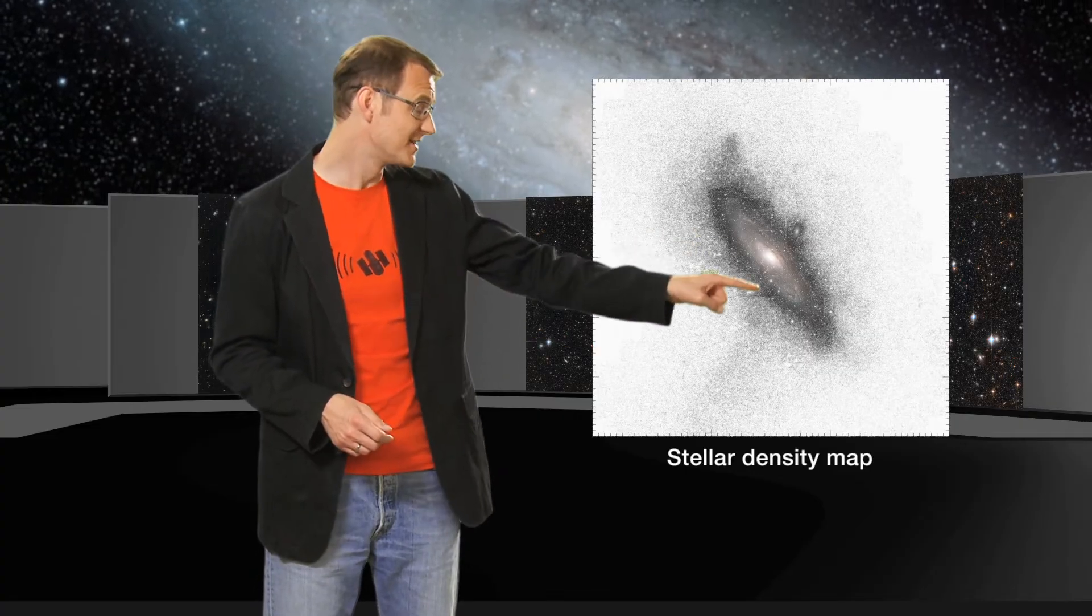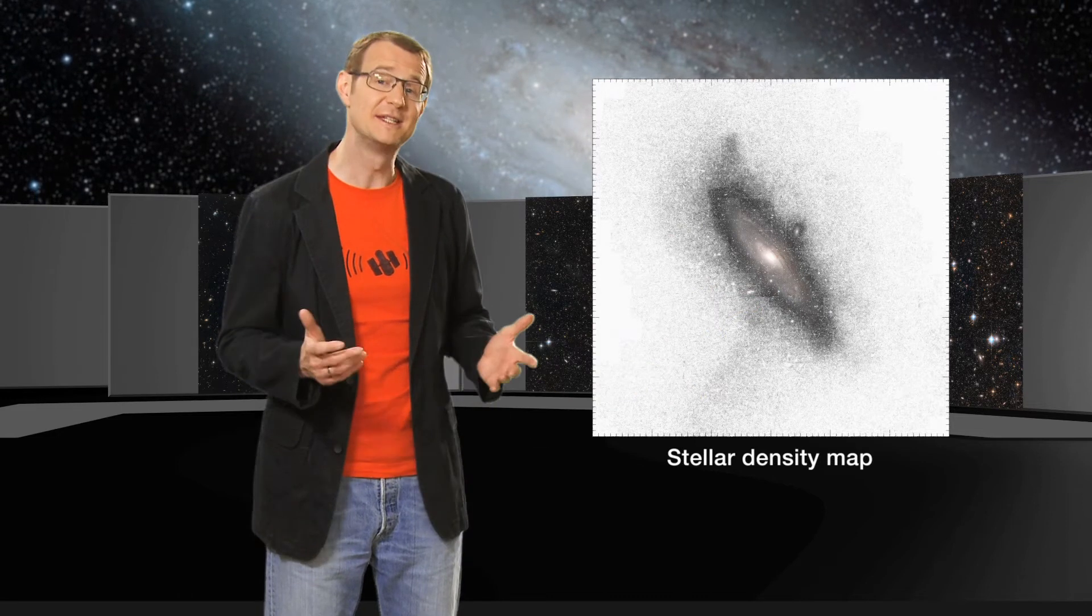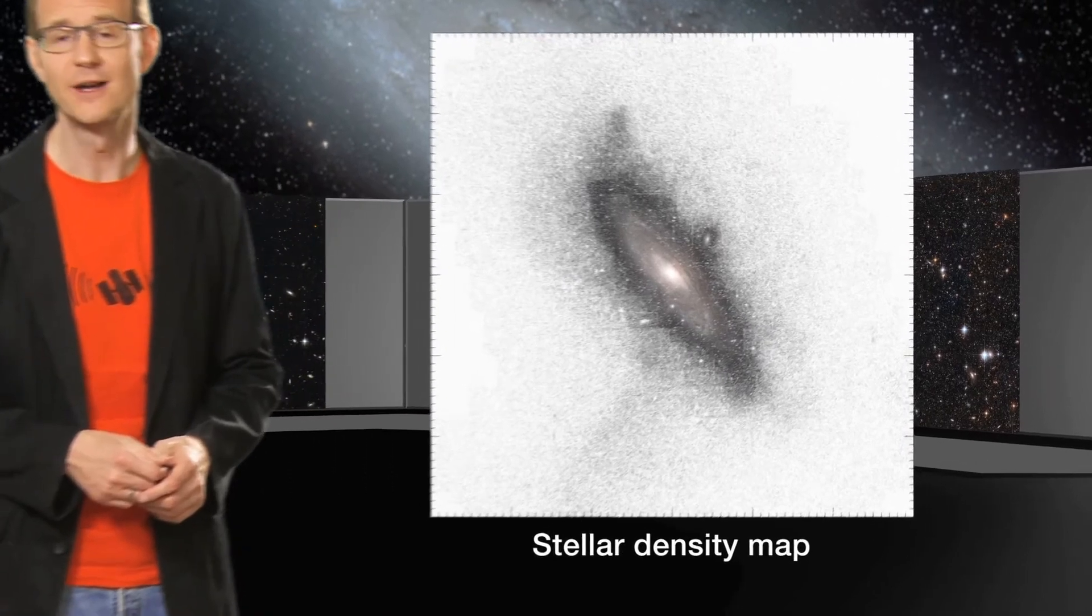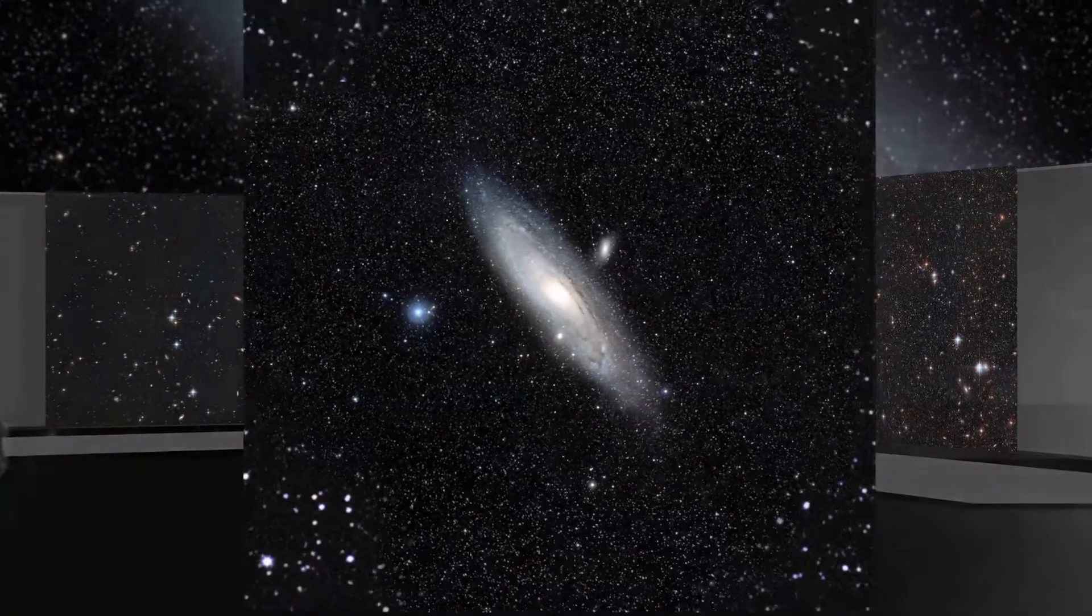This giant stellar stream is noticeably denser than the rest of the halo. This swathe of stars was left behind by a dwarf galaxy that was swallowed by Andromeda.